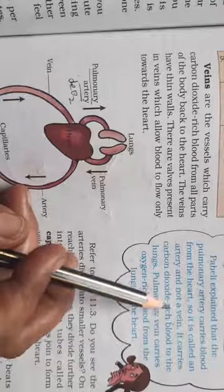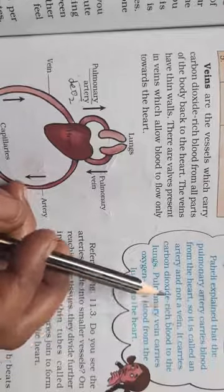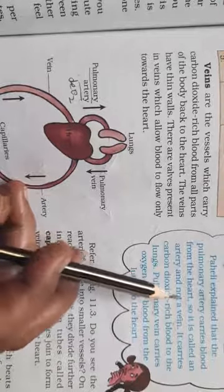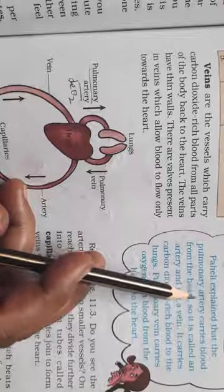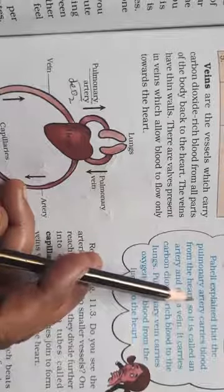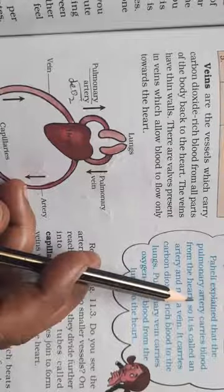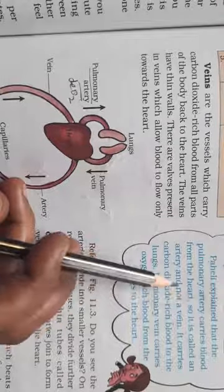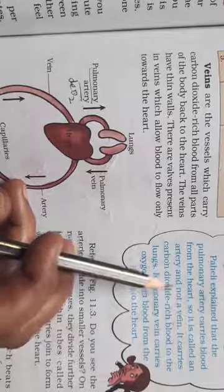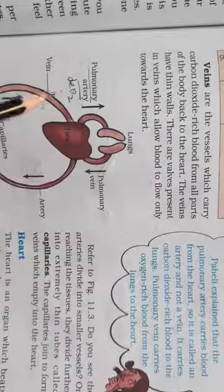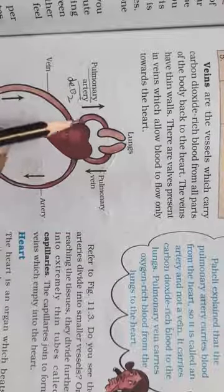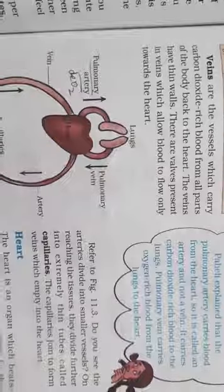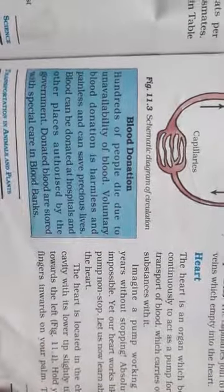This question can come in the exam: why, even though the pulmonary artery carries deoxygenated blood, is it called an artery and not a vein? The reason is that it is carrying blood from the heart. Then we come to the next topic, which is blood donation.